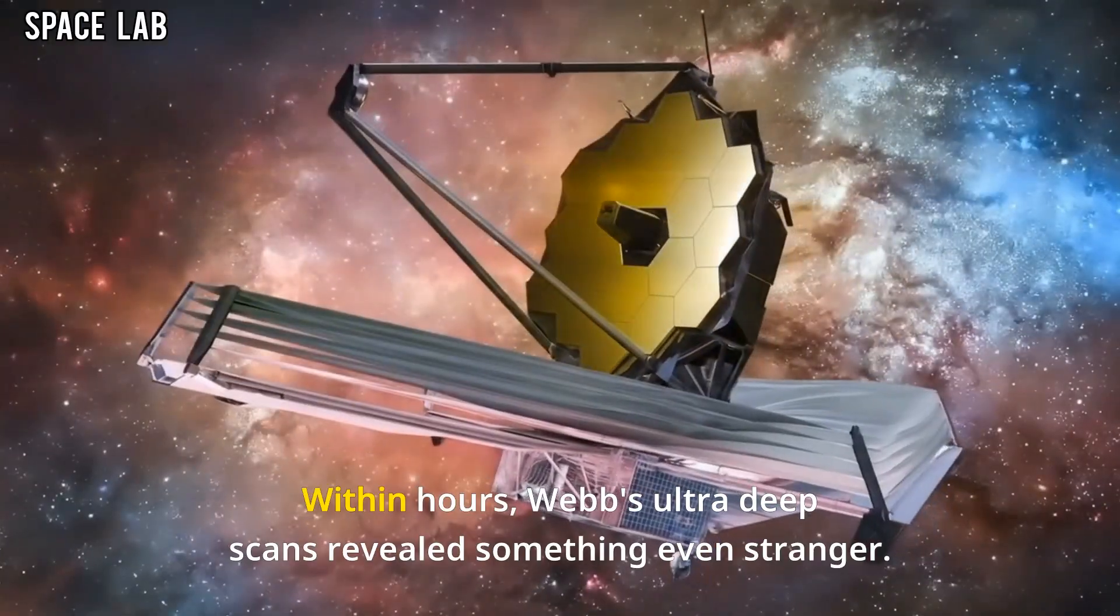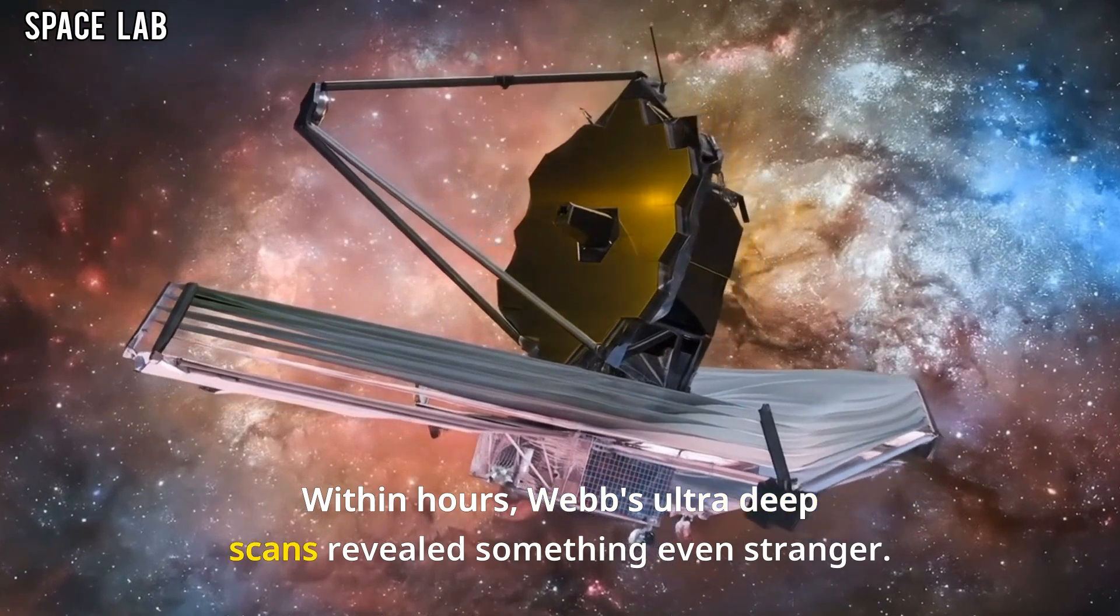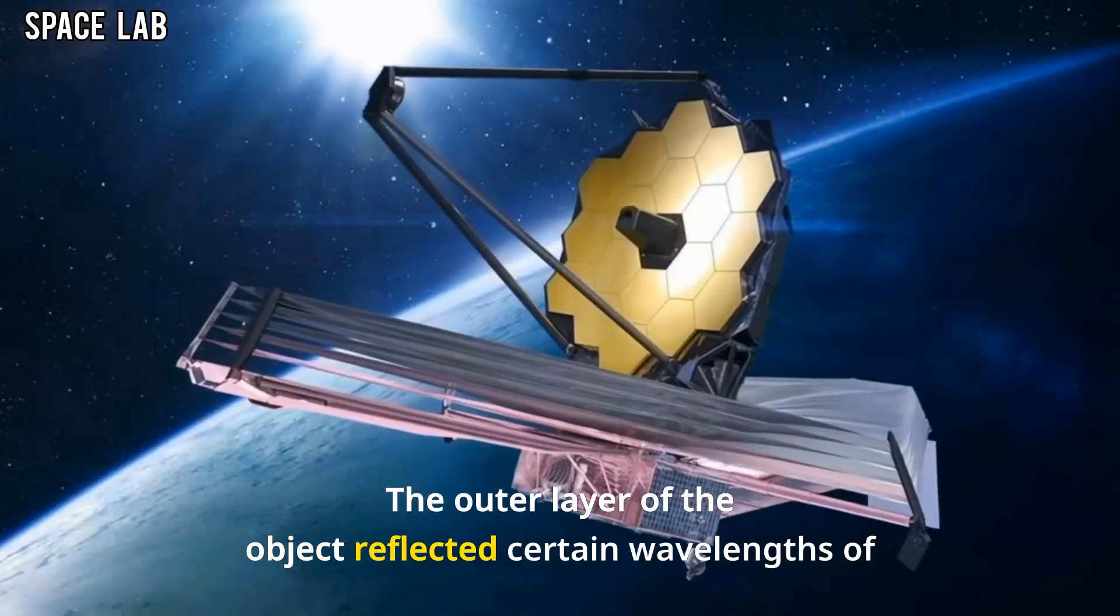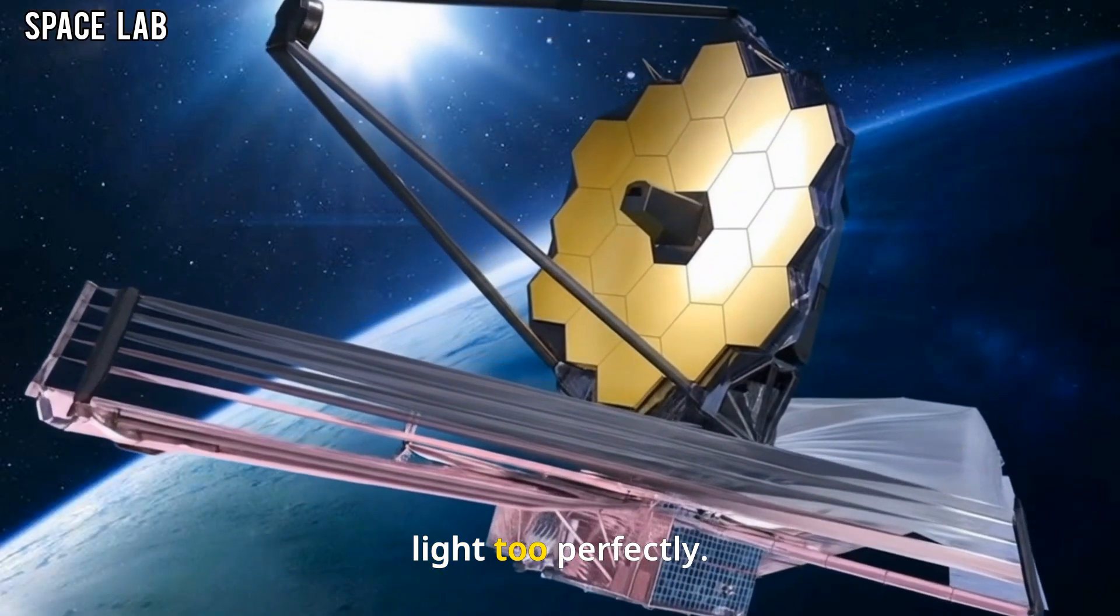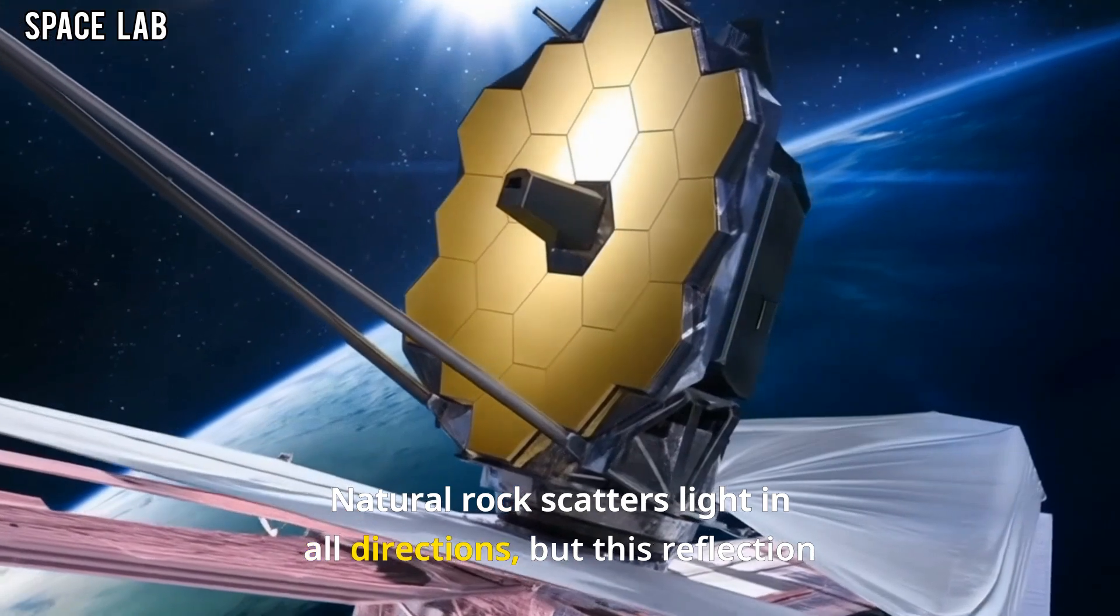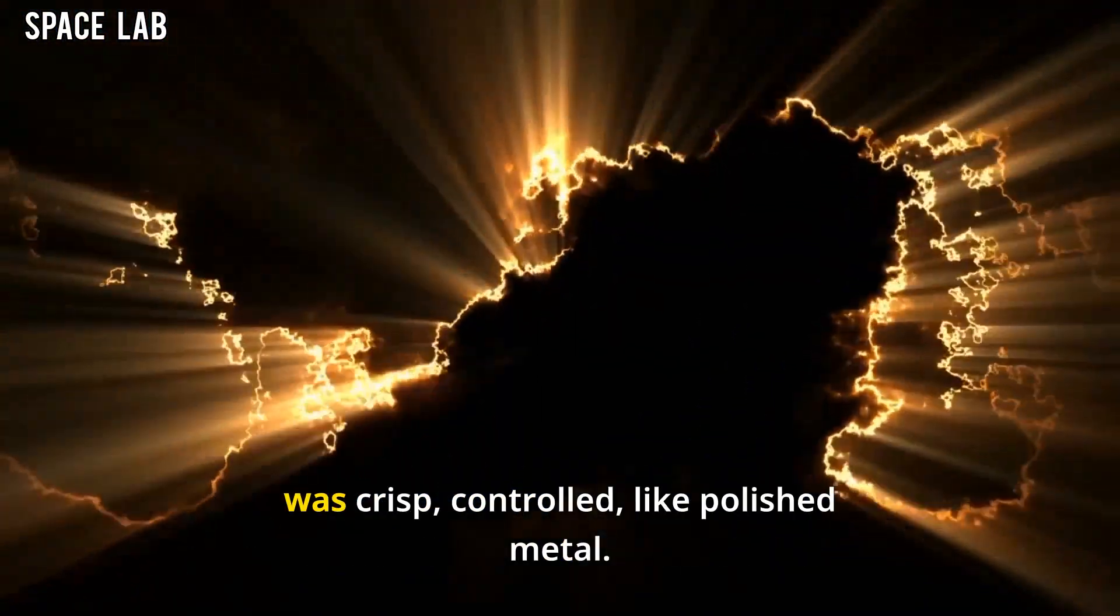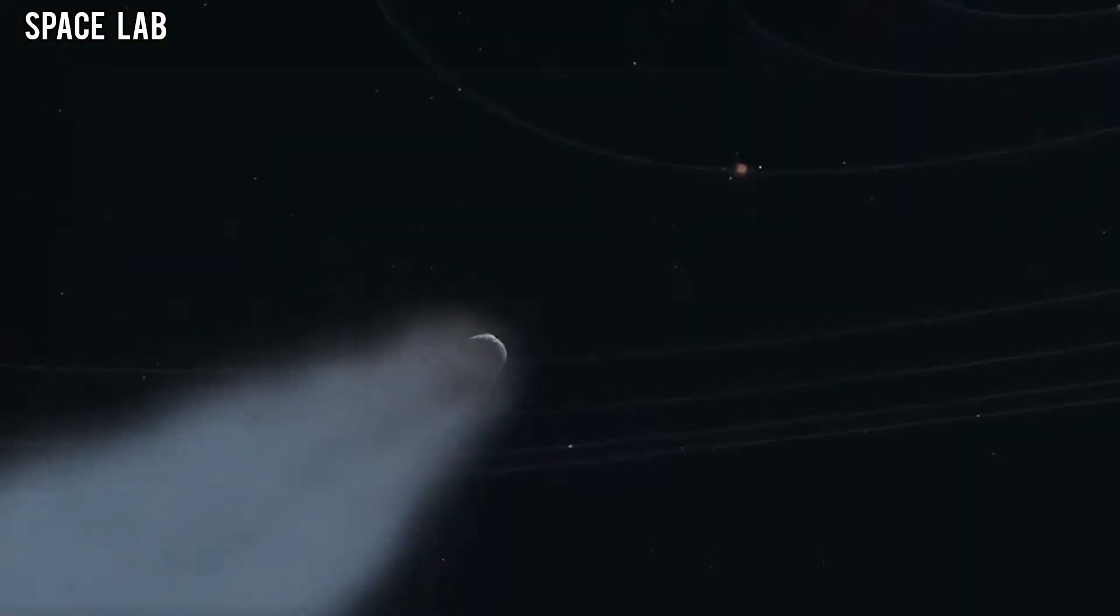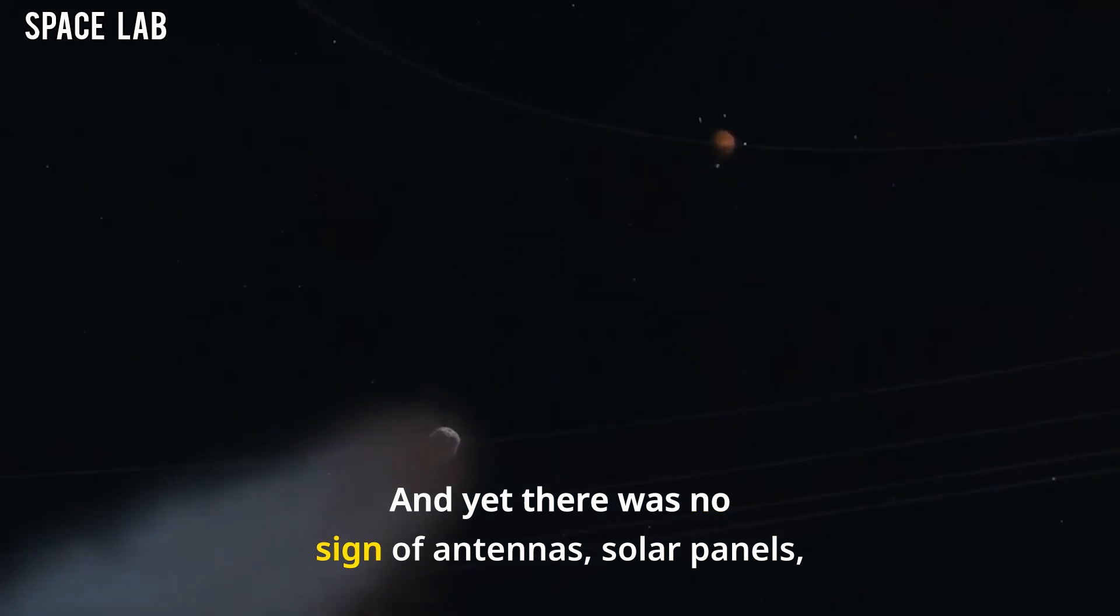Within hours, Webb's ultra-deep scans revealed something even stranger. The outer layer of the object reflected certain wavelengths of light too perfectly. Natural rock scatters light in all directions. But this reflection was crisp, controlled, like polished metal.